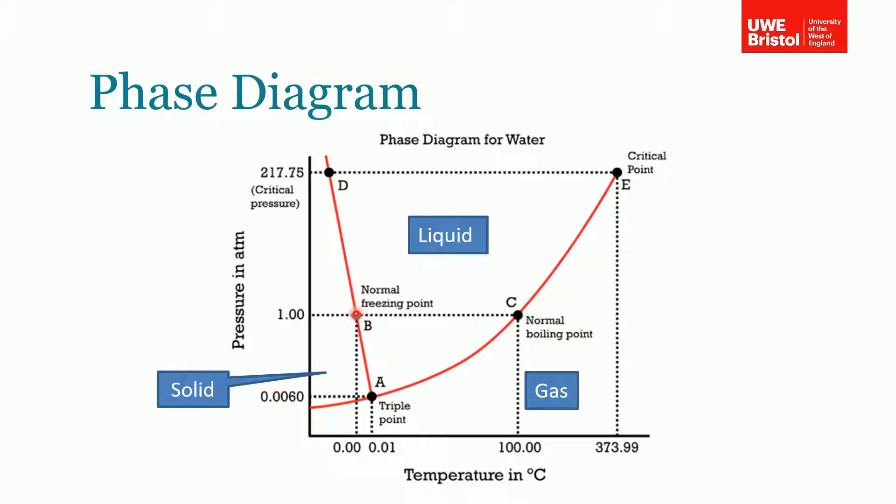Likewise at point C, the water is existing in its liquid state and its gaseous state at the same time. You might have noticed the point down here where these three lines intersect. This is called the triple point, where the substance can exist in both a solid, a liquid, and a gas simultaneously.